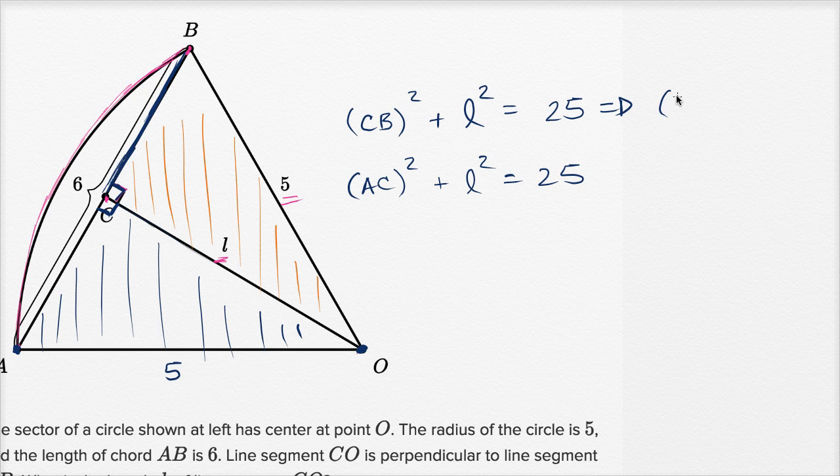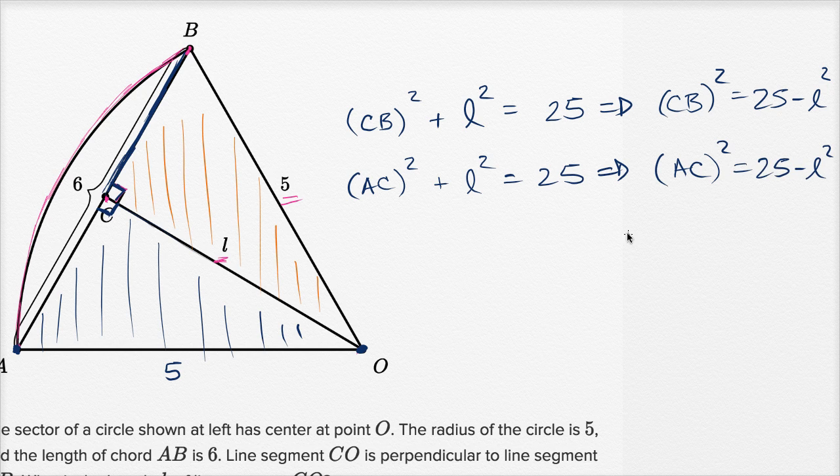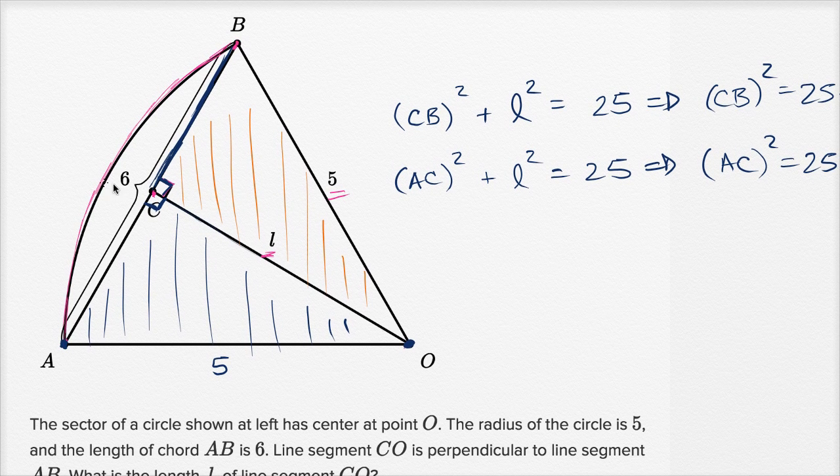If we subtract L squared from both sides, CB squared is equal to 25 minus L squared, and we could write that AC squared is equal to 25 minus L squared. And so these two things are going to be equivalent. Now that is useful, because now we know that the point C is at the midpoint of AB.